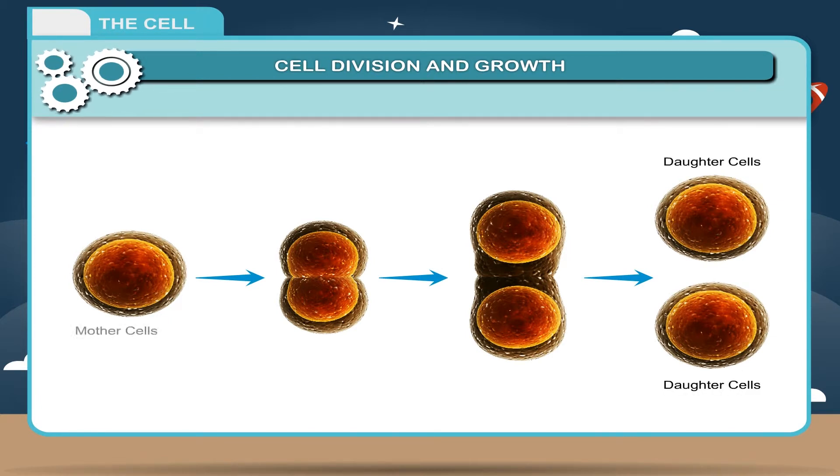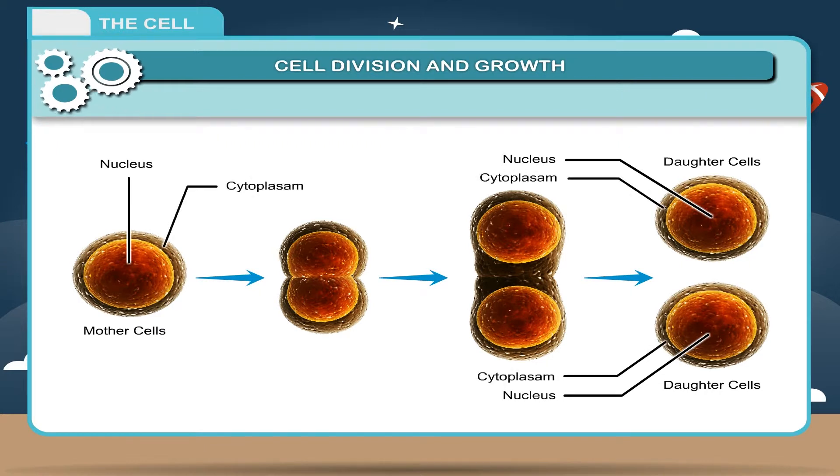Each cell when mature divides into two cells called daughter cells which are identical to mother cells. The nucleus and cytoplasm both divide into two daughter cells which increase in size and again divide.